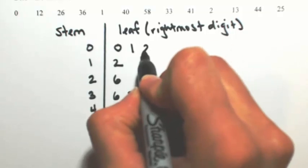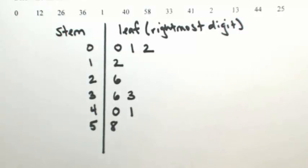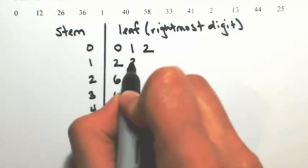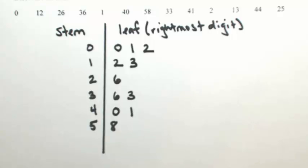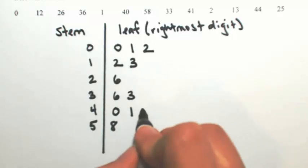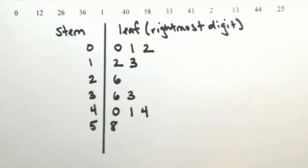For 2, that's 0, 2. For 13, that's 1 and then 3 - make sure you line it up. For 44, that's 4 and 4. And 25. So this is a stem plot.